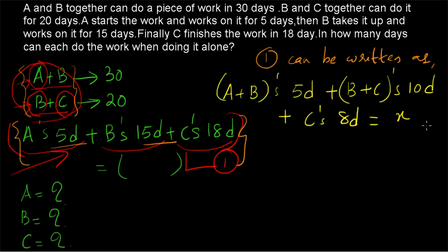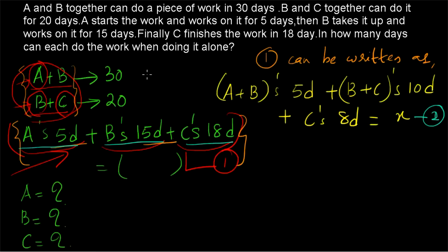Let the total amount of work be equal to X — this is equation 2. So equation 1 states: A works 5 days, B works 15 days, and C works 18 days, and the work is completed. We combine this so as to form A+B and B+C, because we are only given A+B and B+C. We write: (A+B)'s 5-day work, plus (B+C)'s 10-day work, plus C's 8-day work equals X.